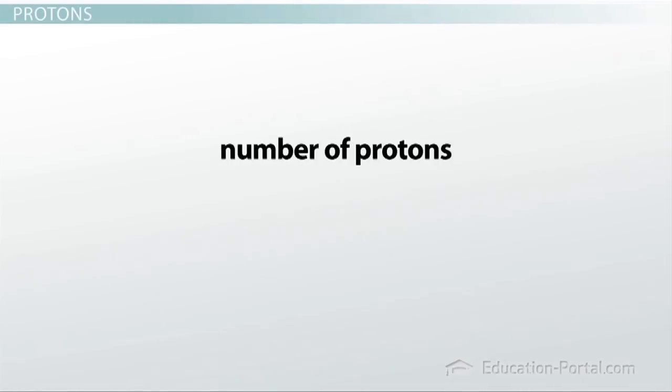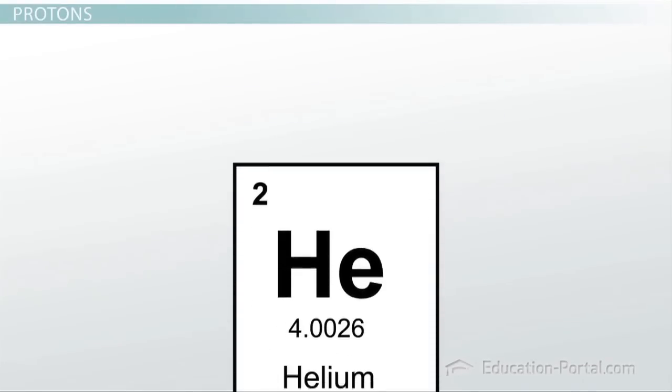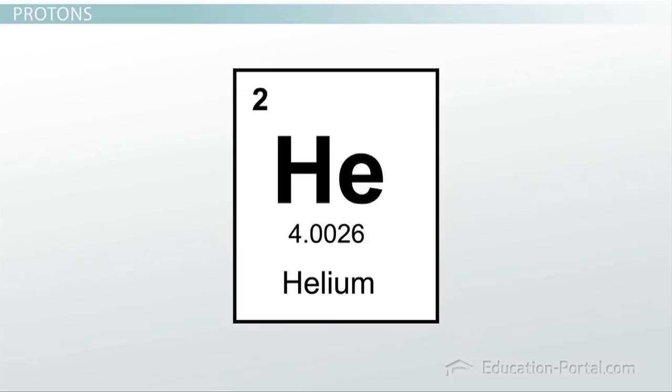The number of protons is called the atomic number, and it is really special because it gives the atom its identity. Keep in mind that not all periodic tables are exactly the same, so some may have the atomic number for each element in a different location. Another interesting feature of the proton is that it carries an electrical charge of plus 1. Don't worry about the units of this charge, just remember that it has a charge of positive 1.